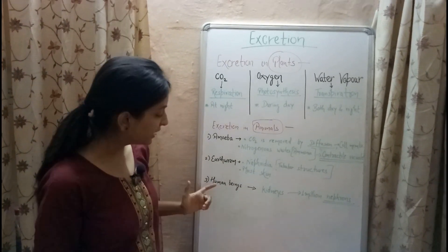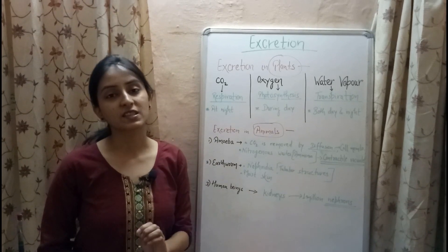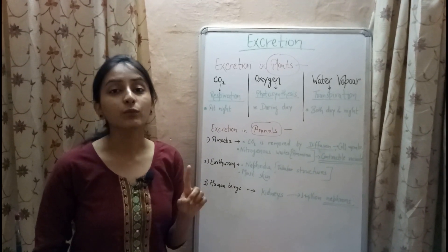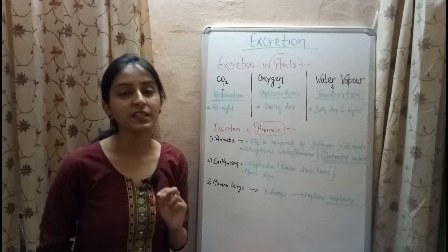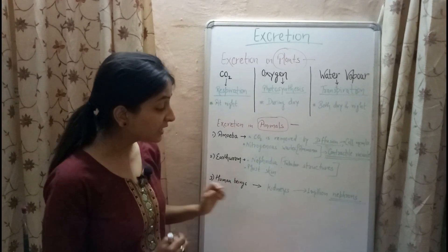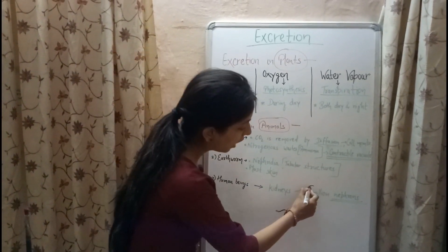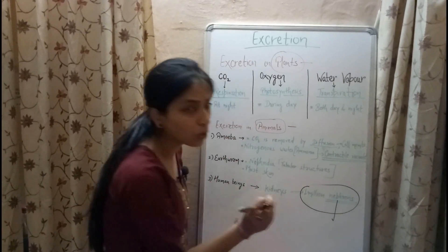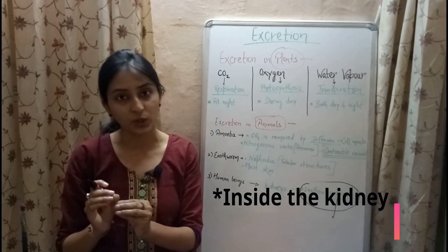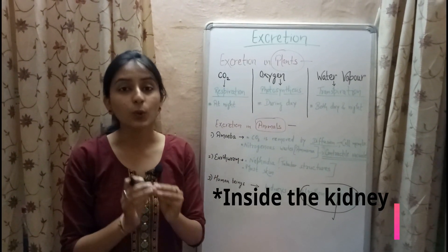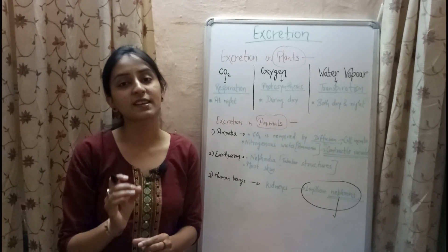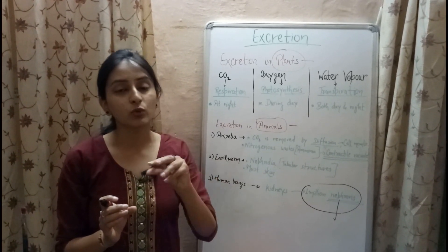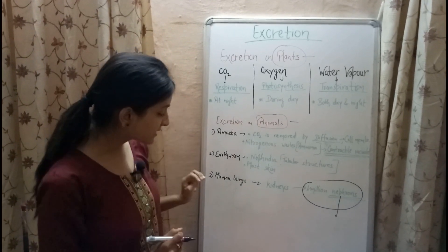In human beings, kidneys are responsible for excretion. Humans contain one pair of kidneys — that is, two kidneys are present. Each kidney consists of one million nephrons, which are the small structures present inside. So in human beings, nephrons are the excretory unit which helps in removal of waste products.